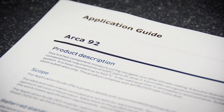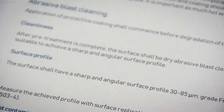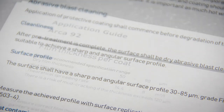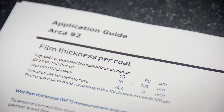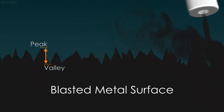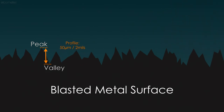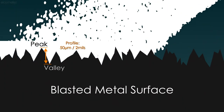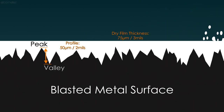Whilst we know surface profile increases the surface area, and through this the adhesive properties of the coating, how do we know what surface profile is required? Quite simply, this is specified by the coating manufacturer or the coating specification agreed to by all parties, and is directly related to the specified dry film coating thickness being applied. Typically, the surface profile specified is the peak to valley height in either microns or mils, and the coating is also specified in either microns or mils as a dry film thickness.